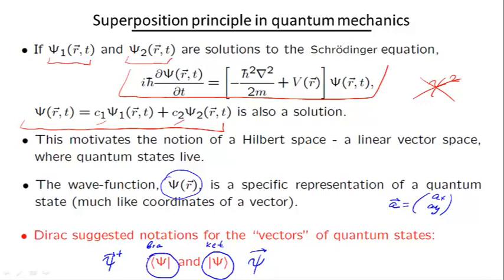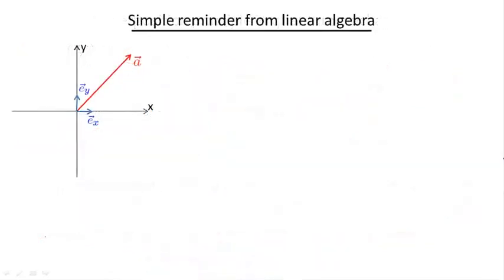To tell you the truth, there is no profound reason for the choice of this particular notation. They just turned out to be convenient to calculate matrix elements, as we will see. Neither is there a profound reason to call them this way. Bra and ket vectors are called this way because when put together, they sound like a bracket, which they sort of look like.